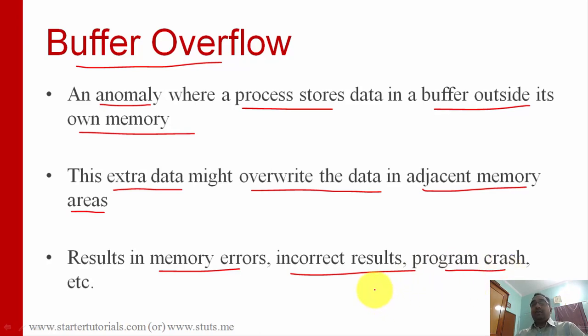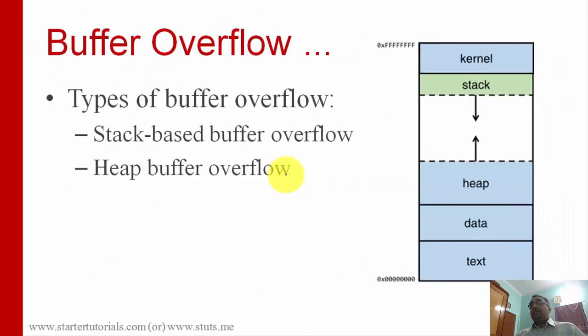There are two types: one is stack-based buffer overflow and heap-based buffer overflow. This is the process image for every process running on your system in the random access memory. The process image will be created. Every process will have text segment, data segment,